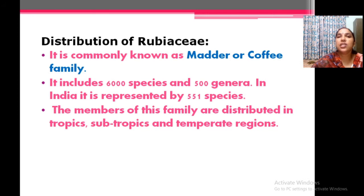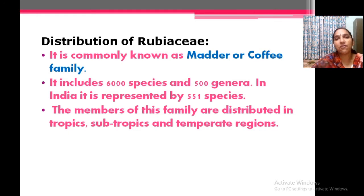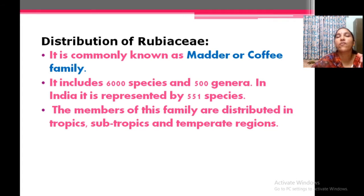Distribution: it is usually known as the madder or coffee family because the coffee plant belongs to this family. It includes about 6000 species and 500 genera. In India there are about 550 species, and members are distributed in tropical, subtropical, and temperate regions all over the world.